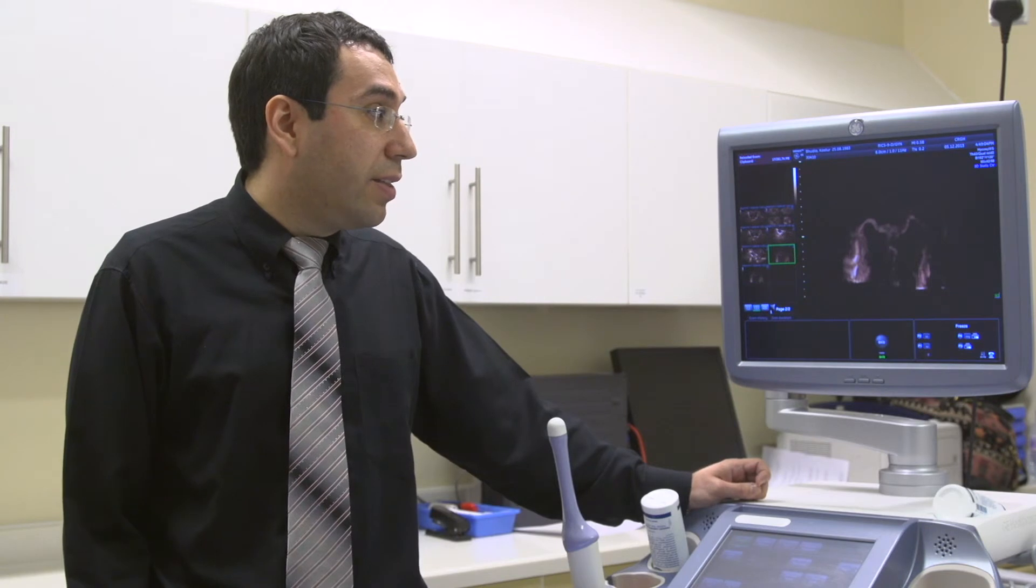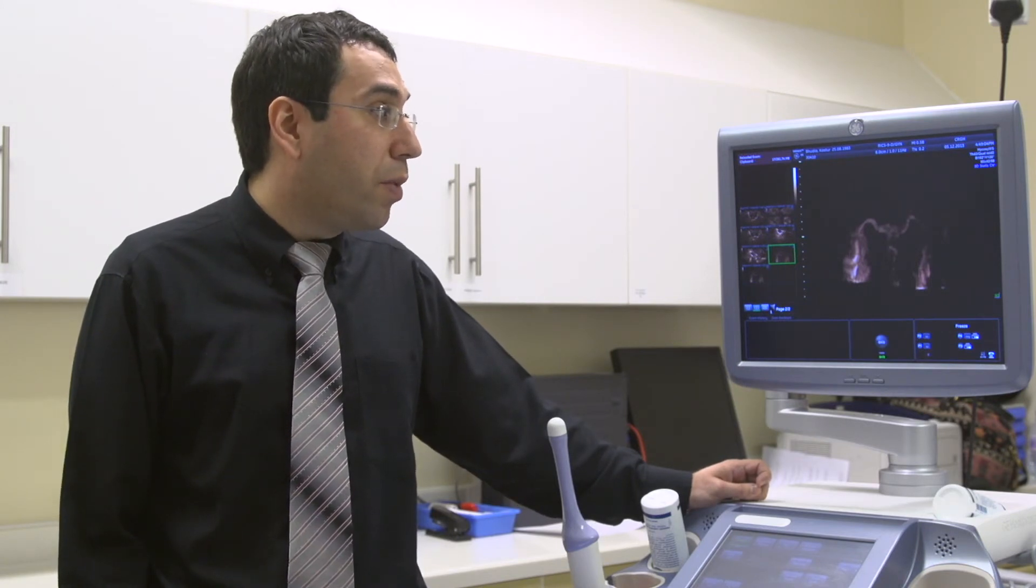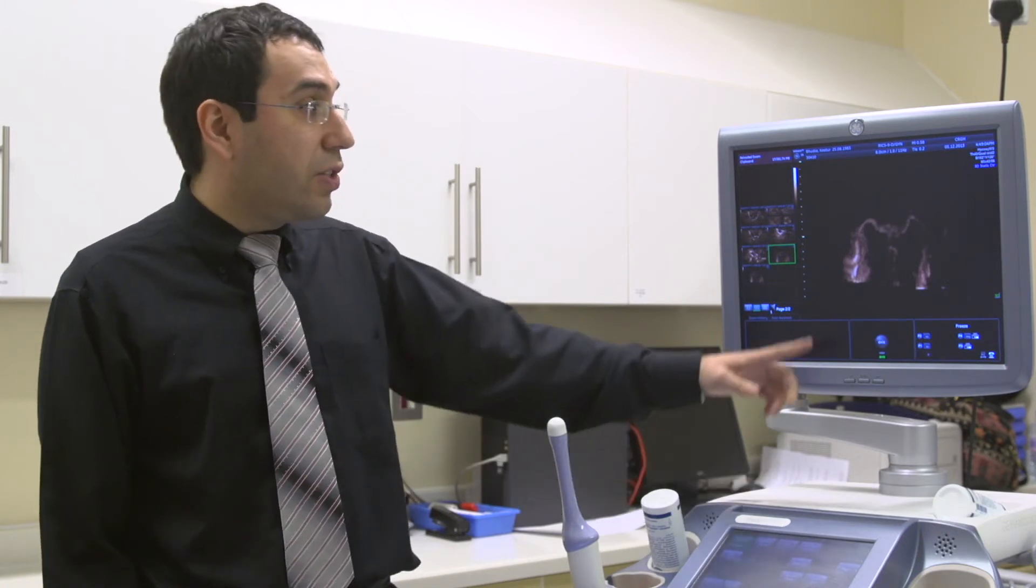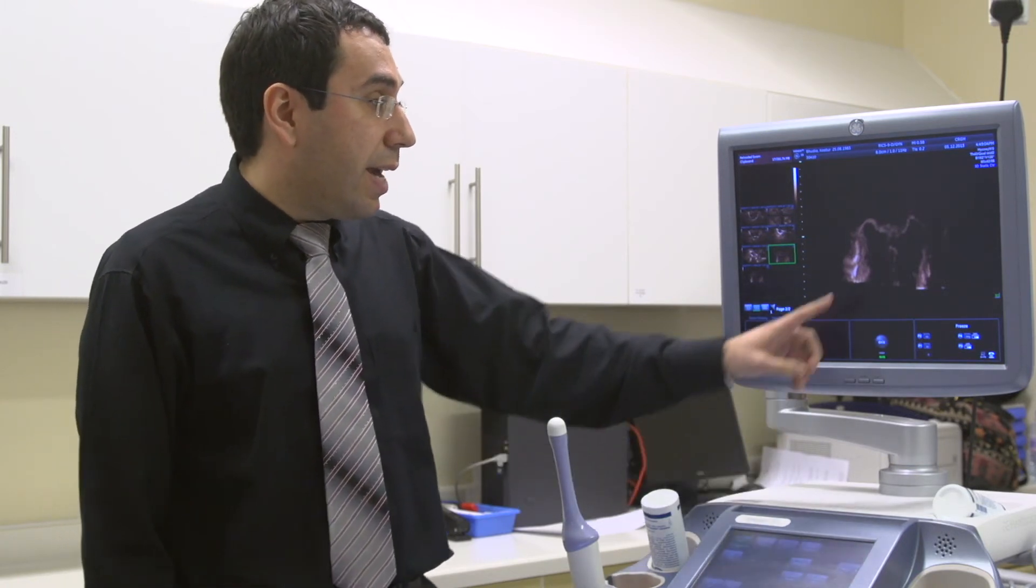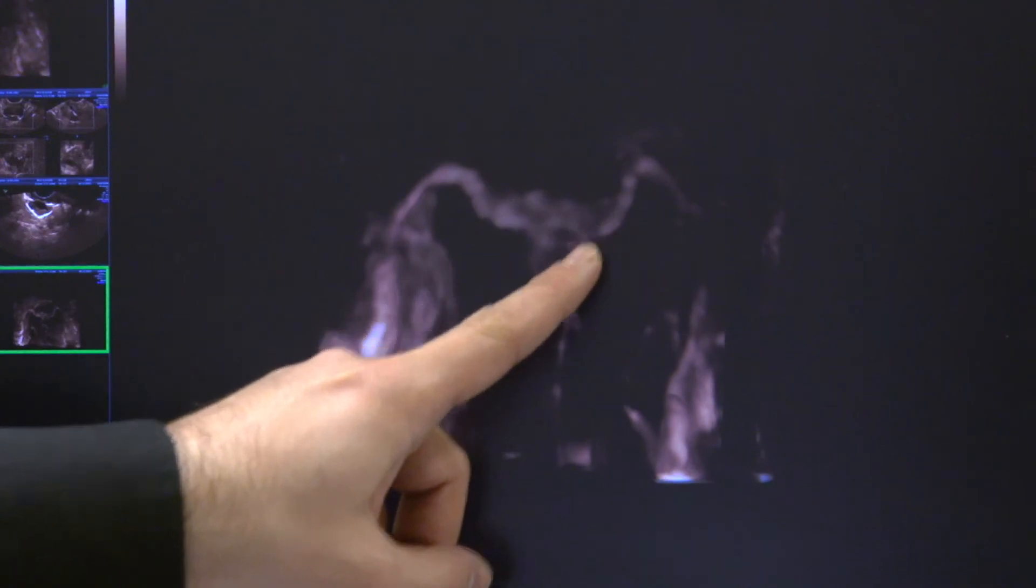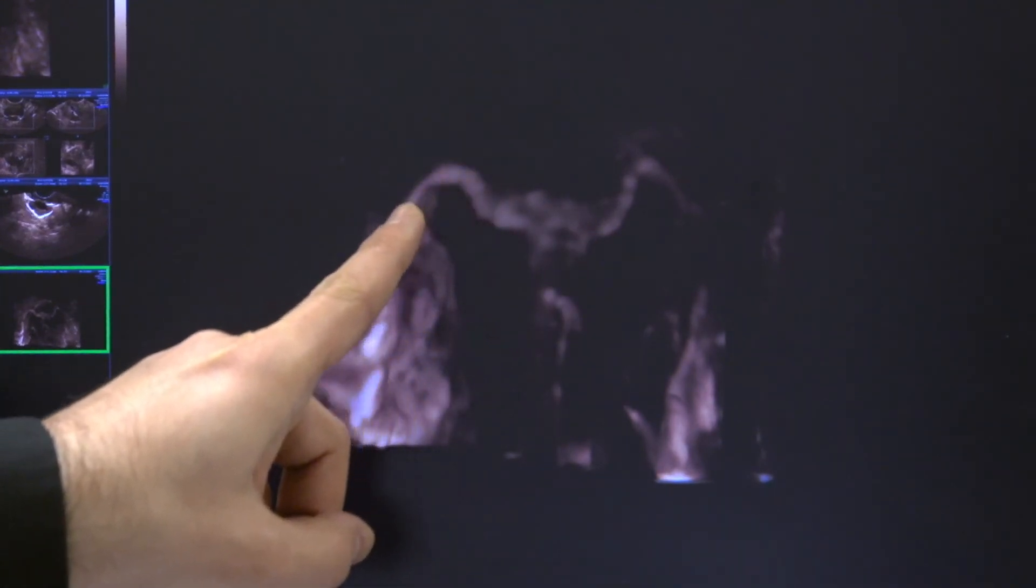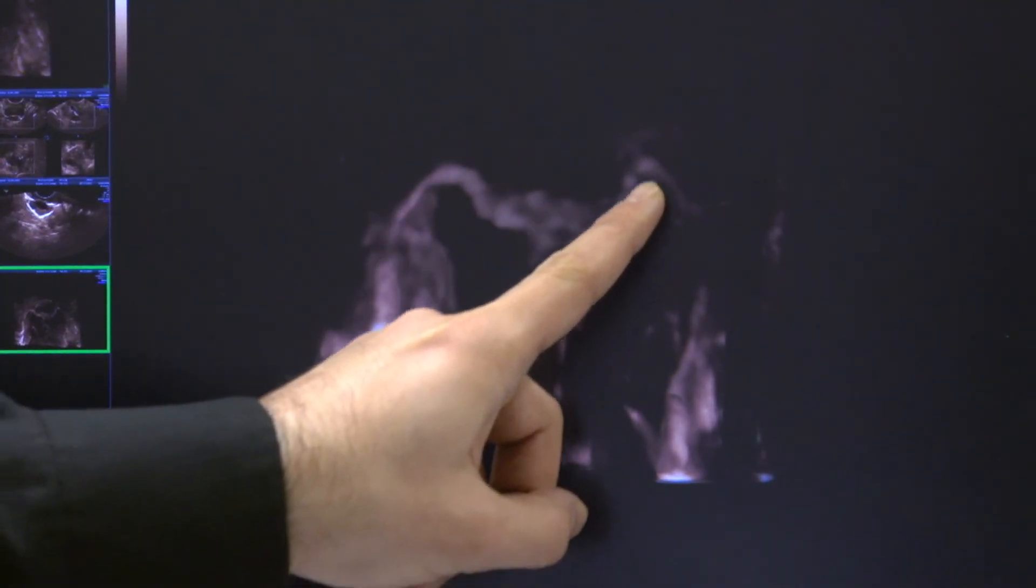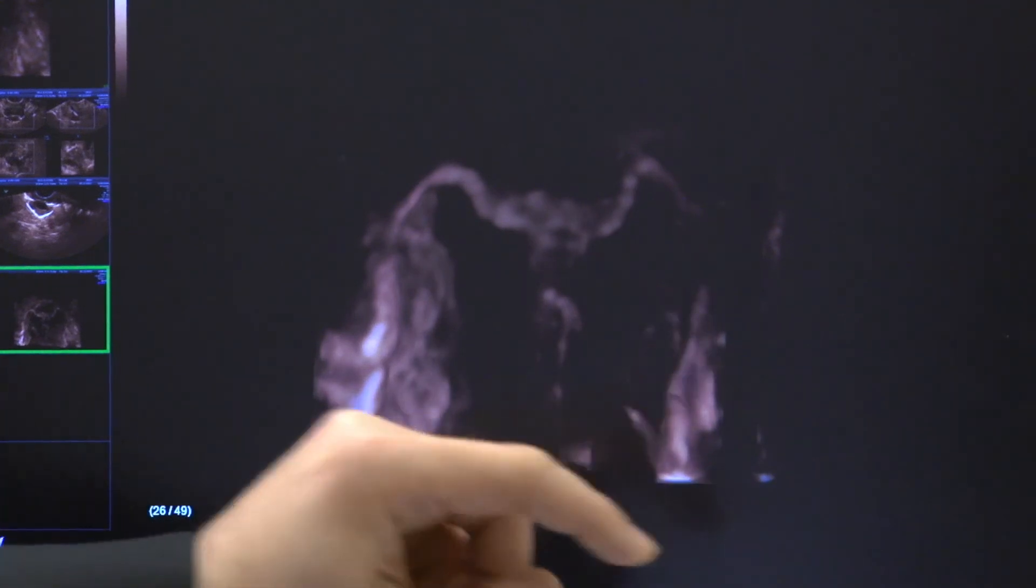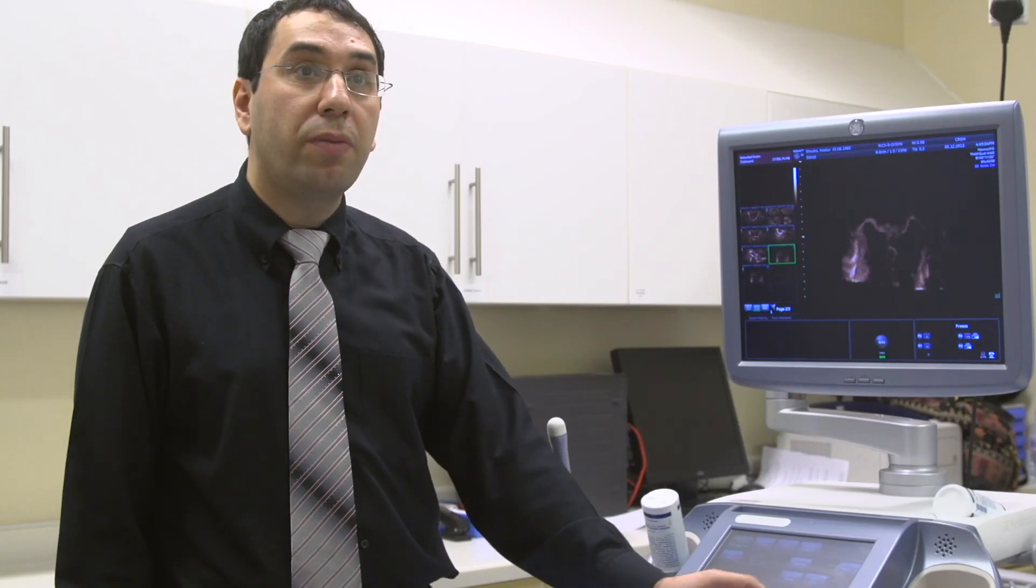As you can see on the screen, this is an example of a normal 3D hysterocontrast sonography or 3D HyCoSy. The bright stuff is the dye and you can see that's the uterus and this is one tube and the second tube. In three dimensions, you can rotate the tube around different axes to make sure that the tube is normal from top to bottom.